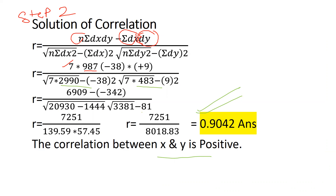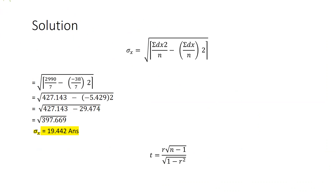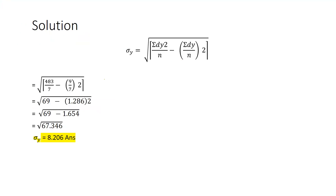Now step 3: we calculate standard deviation. The formula for sigma x is applied with all the values, giving sigma x = 19.442. Similarly, using the same formula with the y variable values, sigma y = 8.206.